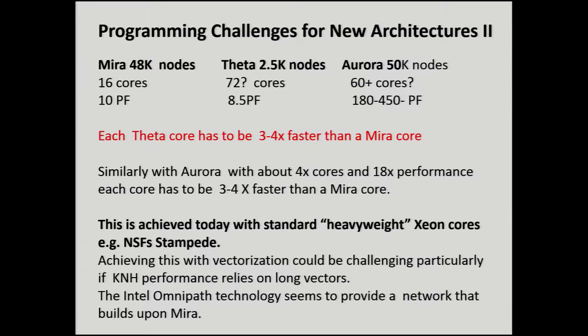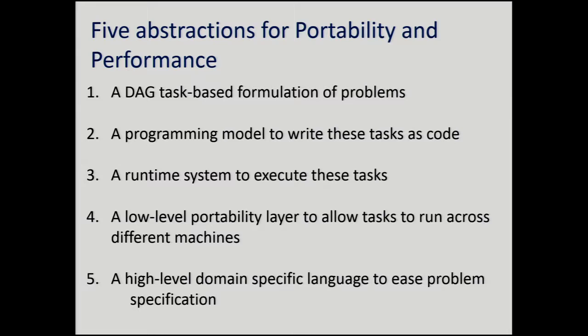Right now you're seeing performance improvement on the Stampede machine, for example, with the full heavyweight Xeon cores. If these future cores are not that much faster than the present Xeon Phi cores, then vectorization is going to have to deliver some of that, which might be a problem. On the other hand, the network seems a bit stronger on this machine than on the Titan machine. Two very different machines — one with a very large number of cores and nodes, one with relatively few but very powerful nodes. We have to figure out how to program these with the same code.